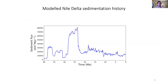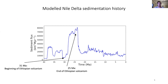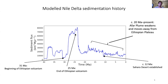We also looked at the sedimentation history for the Nile Delta in our model, which allows us to identify several of the most important events in the history of the Nile. These include the beginning and end of flood basalt volcanism associated with the Afar plume on the Ethiopian plateau, which was responsible for a huge pulse of sedimentation in the Nile Delta. We could also identify the formation of the Sahara Desert and the relative motion between the Afar plume and the African plate in the upper Nile catchment.